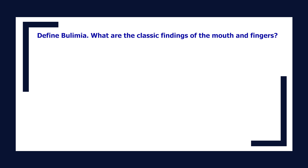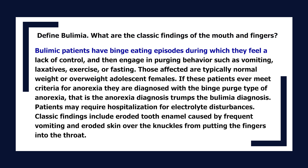Define bulimia and describe the classic findings of the mouth and fingers. Bulimic patients have binge eating episodes during which they feel a lack of control, then engage in purging behavior such as vomiting, laxatives, exercise, or fasting. Those affected are typically normal weight or overweight adolescent females. If these patients ever meet criteria for anorexia, they are diagnosed with the binge-purge type of anorexia. Classic findings include eroded tooth enamel caused by frequent vomiting and eroded skin over the knuckles from putting fingers into the throat.